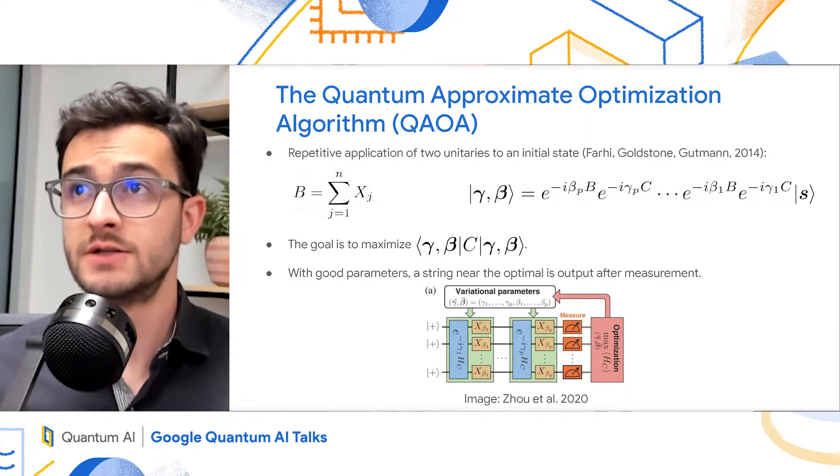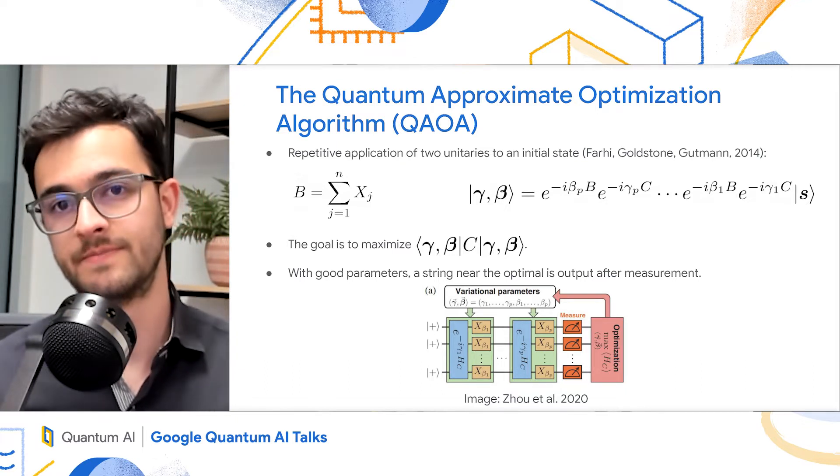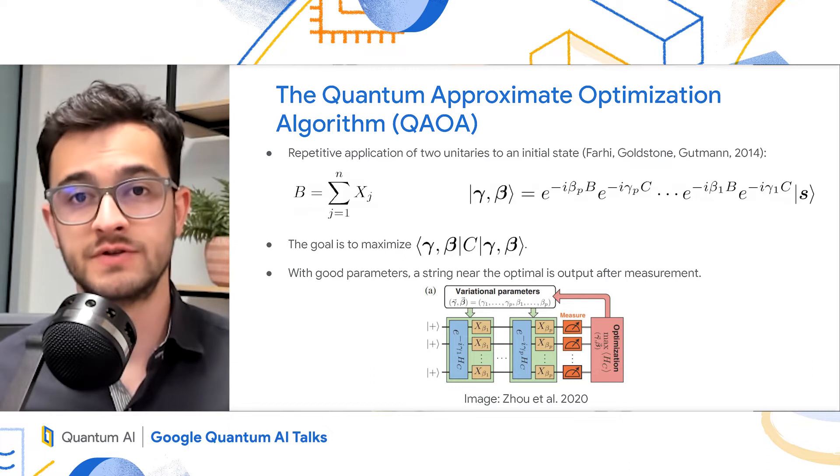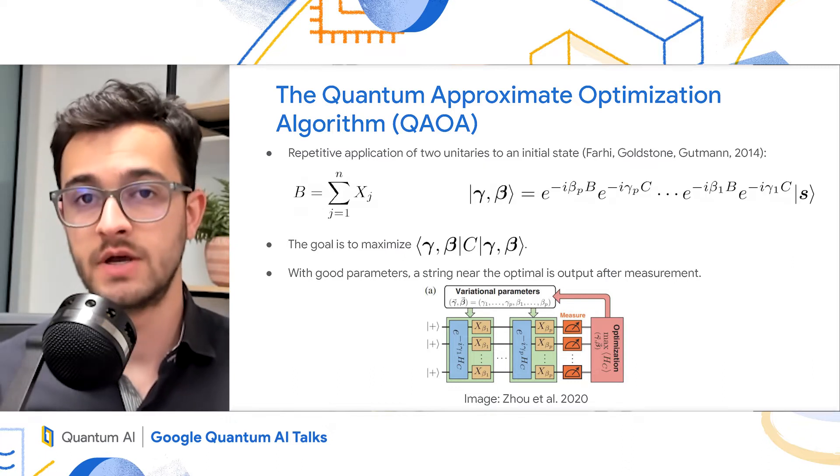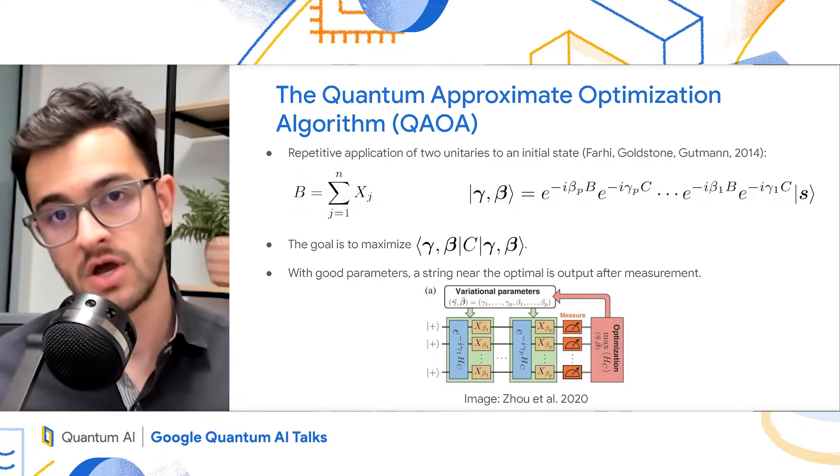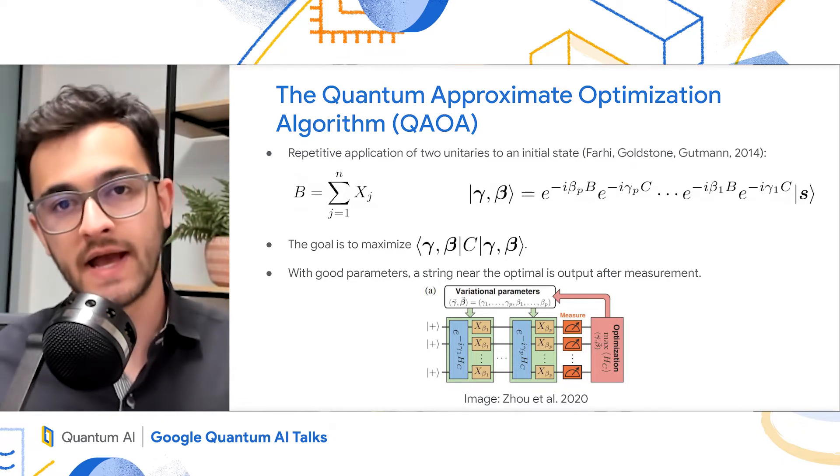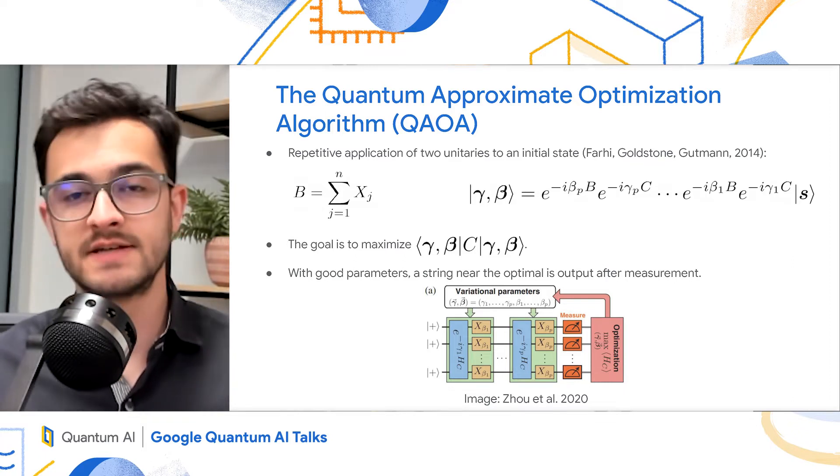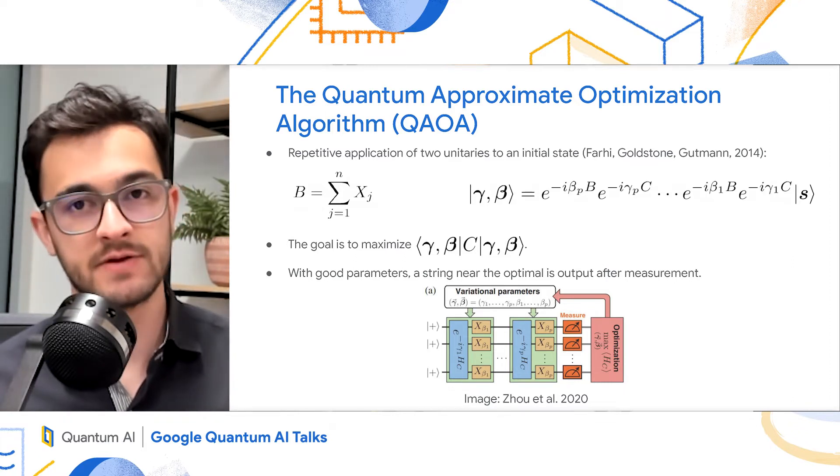The QAOA stands for the quantum approximate optimization algorithm. It is a general-purpose quantum algorithm for approximating solutions to combinatorial optimization problems. And here's how it works. We start from equal superposition of all bit strings, and then we apply e to the minus i gamma 1 C, and e to the minus i beta 1 B. C is the cost function of your problem, and B is the sum of the Pauli X matrices.